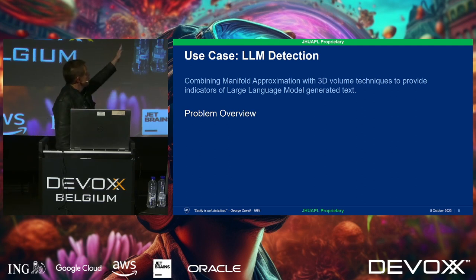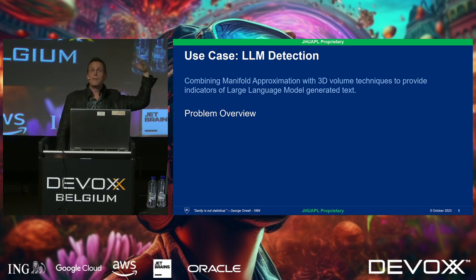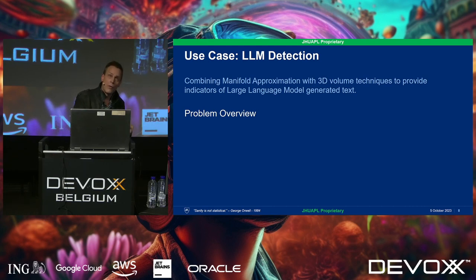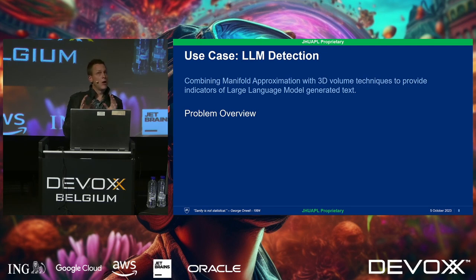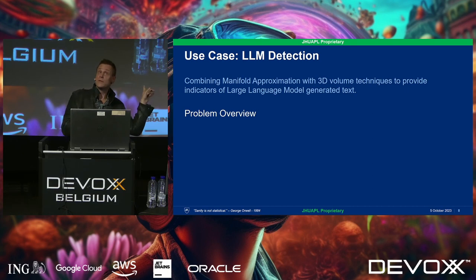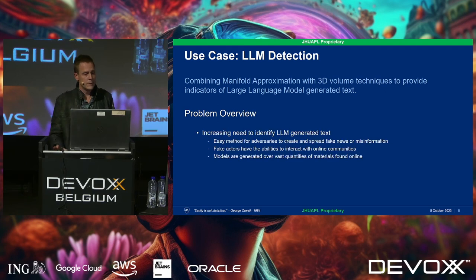I'm going to show what's called a manifold approximation technique, combined with 3D volume techniques, to provide quick indicators as to whether or not text has been generated by a large language model. There are caveats — it's not 100%, there are a lot of variables involved, and we just got this fully working a few weeks ago. But it does work.